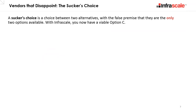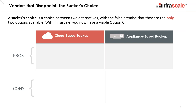Backup vendors are making this even messier by offering a sucker's choice — pigeonholing users into either cloud-based or appliance-based backup, with the false premise that those are the only two options. A sucker's choice is a choice between two alternatives falsely presented as the only options available. Vendors say: do you want a backup system or a DR system, because you can't have both? Do you want on-premise or cloud backup — you can't have both. But we don't buy into this. Companies have a third option.